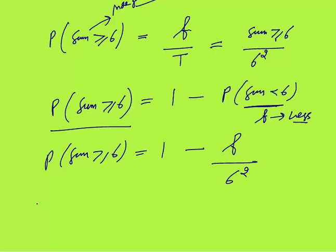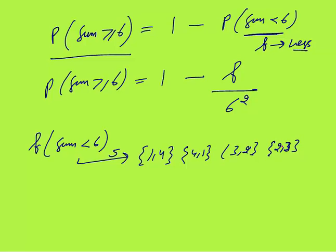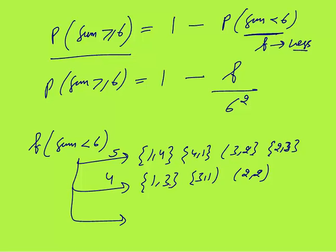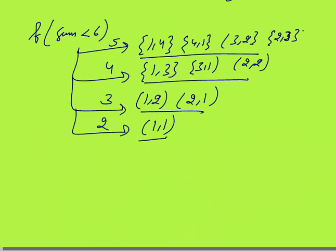Favorable cases for sum less than six: sum of five gives (1,4), (4,1), (2,3), (3,2) — four cases. Sum of four gives (1,3), (3,1), (2,2) — three cases. Sum of three gives (1,2), (2,1) — two cases. Sum of two gives (1,1) — one case. Total: 4 + 3 + 2 + 1 = 10 cases.